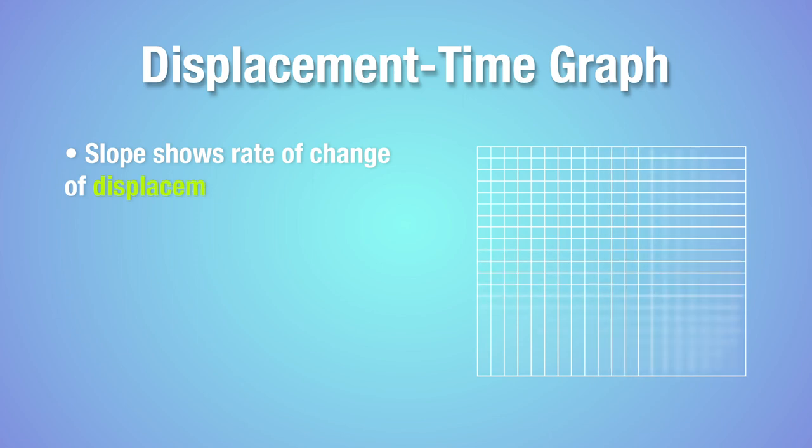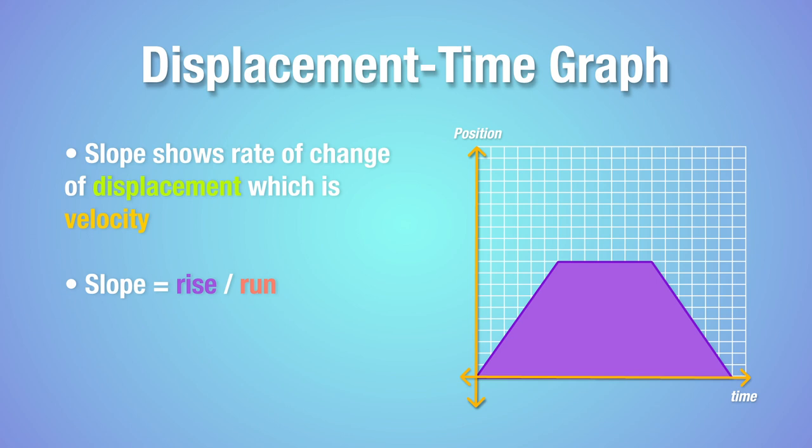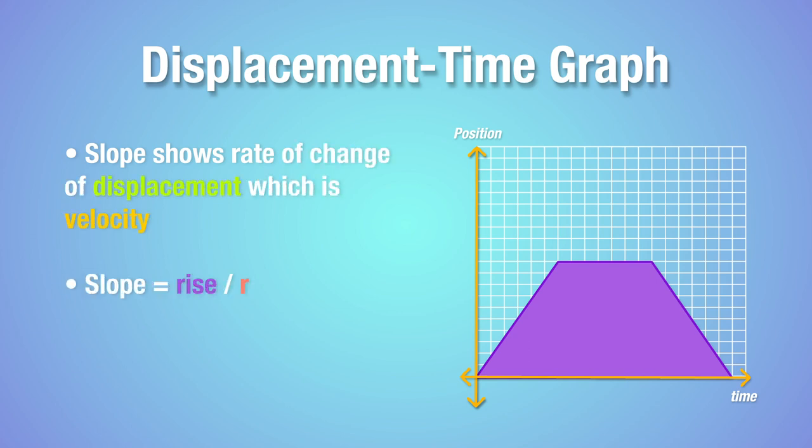Let's talk about the displacement time graph now. Now these record the displacement of an object from a reference point with respect to time. Unlike a distance time graph though, a displacement graph can move both up and down. Now since the distance is being measured from a reference point, whenever the moving object moves closer to the point, the displacement will decrease, which is recorded as a lowering of the graph. Now we can use the displacement time graphs to calculate the velocity of the moving object at any given point in time. We do this by, again, finding the slope of the graph at that point.